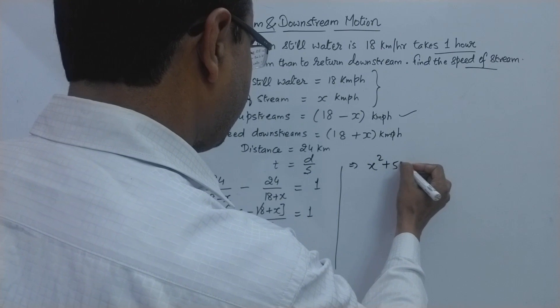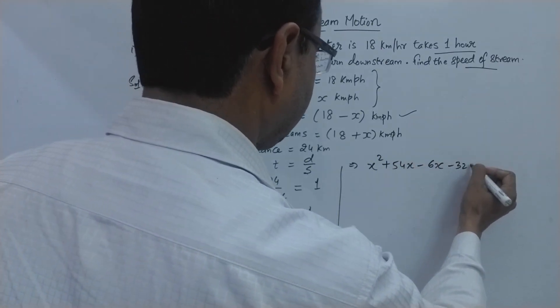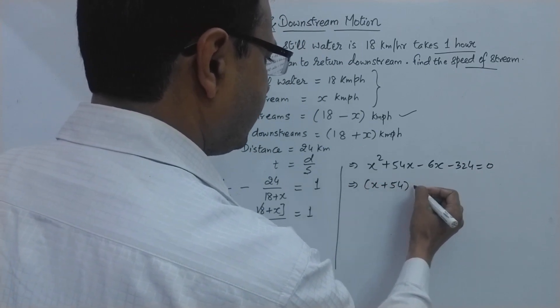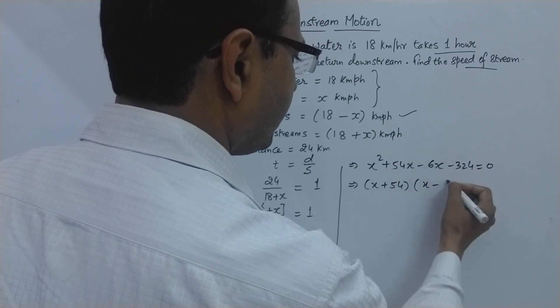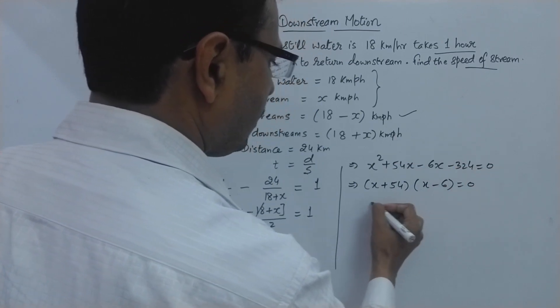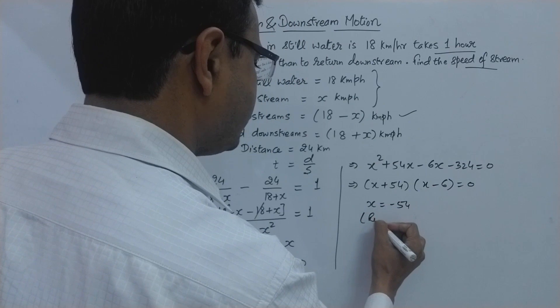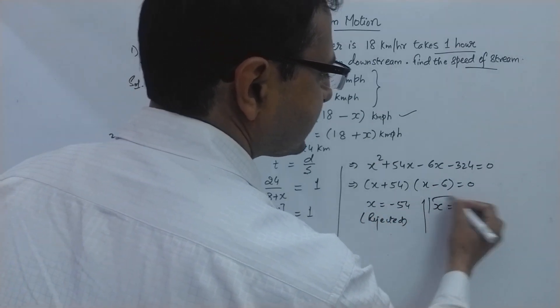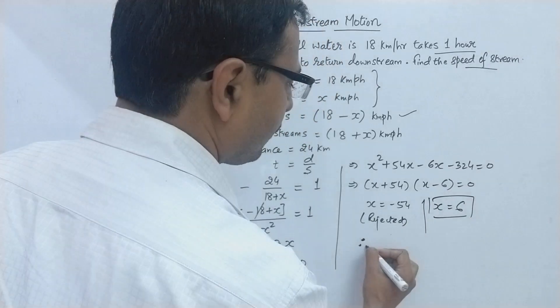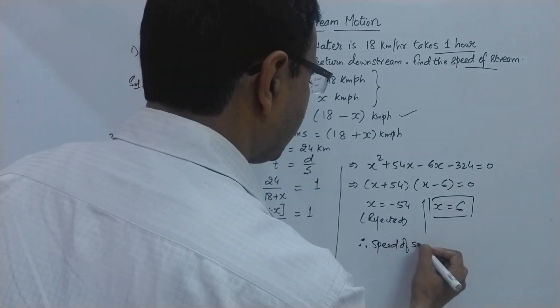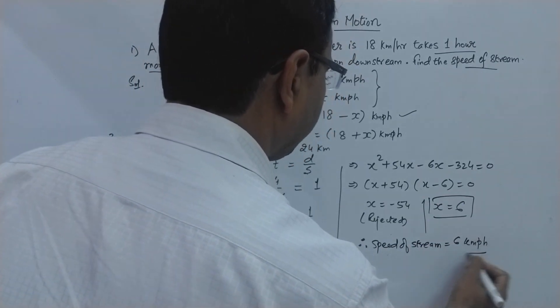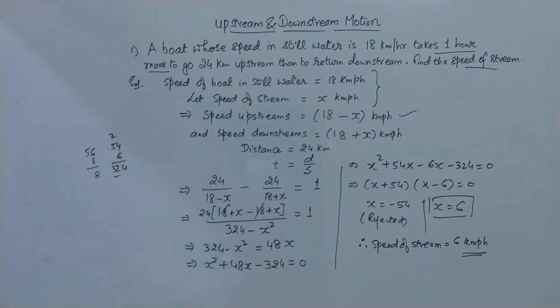So plus 54 minus 6 and here you have the factors x plus 54 and x is common here and 6 is common here. So thereby giving you x equal to minus 54, this has to be rejected because speed cannot be negative, and x is equal to 6 from here. This is the answer. Therefore the speed of stream comes out to be 6 kilometer per hour in this case.